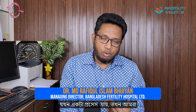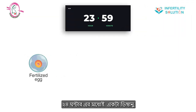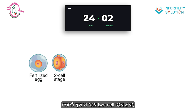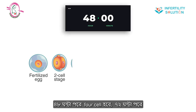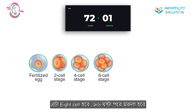When we are working in this process, we are going to proceed further into development. We are going to get a 2–4 cell embryo at around 40 hours. For 72 hours, we are going to get an 8-cell embryo.